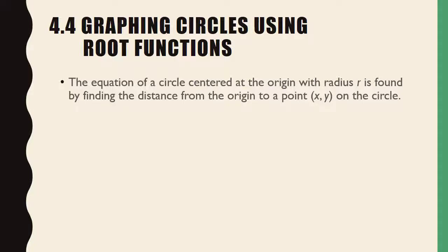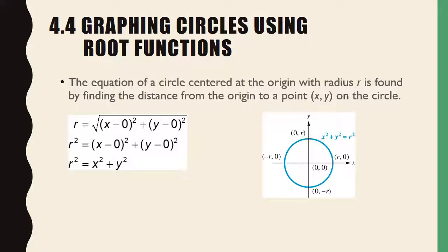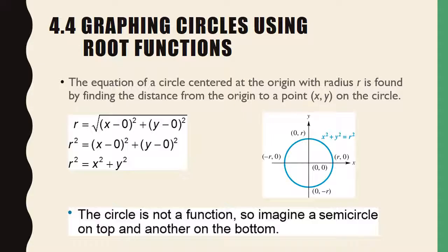The equation of a circle centered at the origin with radius R is found using the distance formula: R squared equals x squared plus y squared. This should be familiar — we did this in both Algebra 2 and Algebra 3 when we covered conic sections. The circle is not a function — it fails the vertical line test. What we've really got is a semicircle on top and another on the bottom; each half by themselves would be a function, but together the entire circle is not.